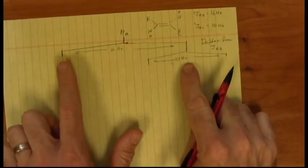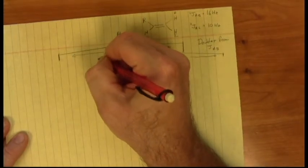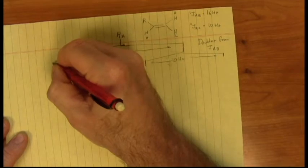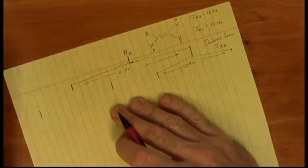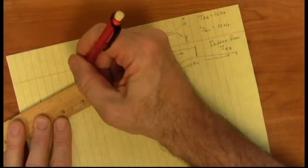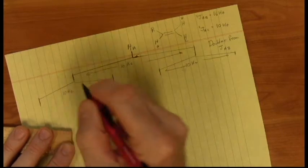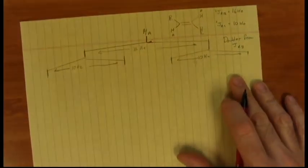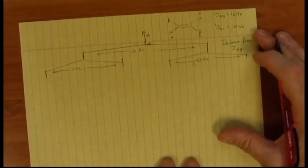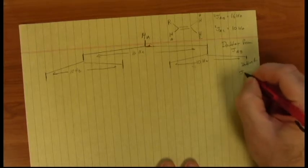Now what I did on this branch, I do exactly the same thing over here. 1, 2, 3, 4, 5 to the right, 1, 2, 3, 4, 5 to the left. Connect everything up. 10 hertz apart. And there it is. And now this is the doublet from JAC. We're going to create a doublet of doublets.